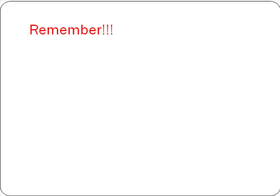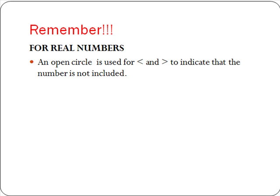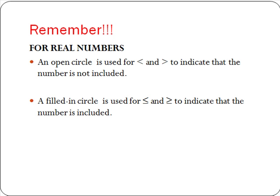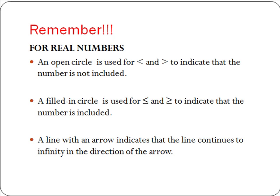To summarize the rules when dealing with real number solutions: an open circle is used for less than and greater than to indicate that the number is not included. A filled-in circle is used for less than or equal to and greater than or equal to to indicate that the number is included. A line with an arrow indicates that the line continues to infinity in the direction of the arrow.